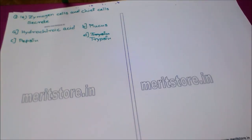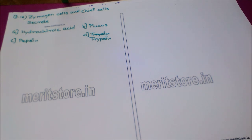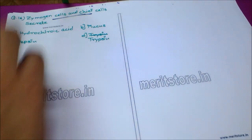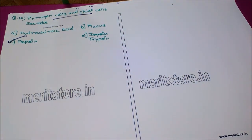The next question: zymogen cells and chief cells secrete — option A: hydrochloric acid, option B: mucus, option C: pepsin, option D: trypsin. Gastric glands are lined with three kinds of secreting cells: the zymogen (chief) cells, the parietal or oxyntic cells, and the mucous cells. The zymogen or chief cells secrete the digestive proenzyme pepsinogen; HCl converts pepsinogen into pepsin. HCl is secreted by the oxyntic cells, while zymogen/chief cells secrete pepsin. The correct answer is option C, pepsin.